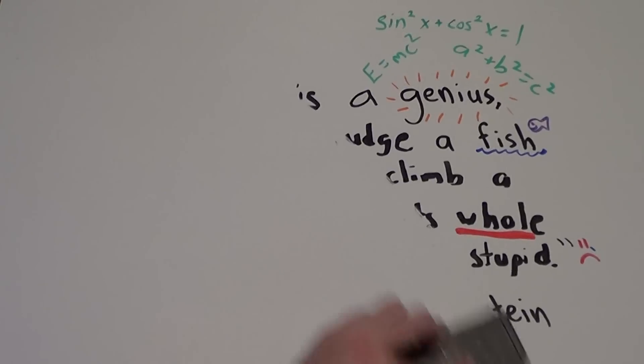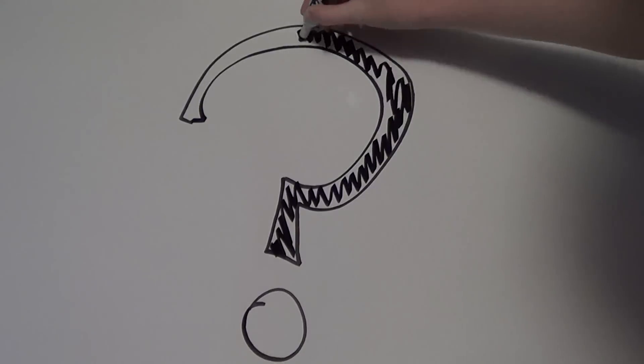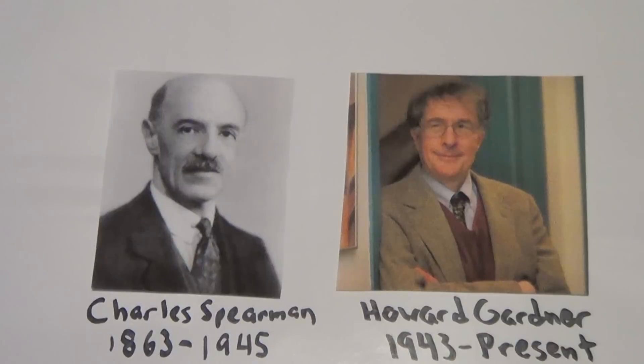Well gee thanks for that Einstein, but everyone knows that a genius is a person endowed with transcendent mental superiority. Or is it? To answer this question, let's take a look at two contradicting theories of intelligence.